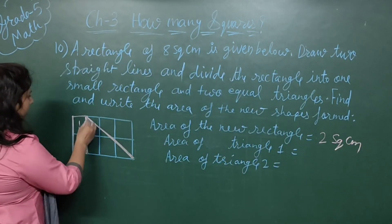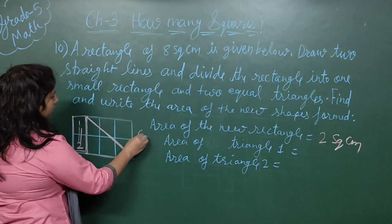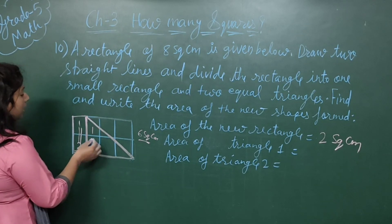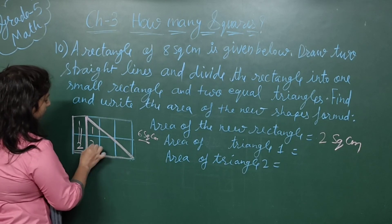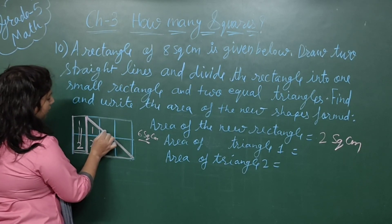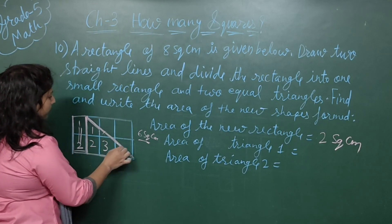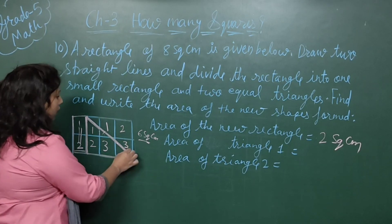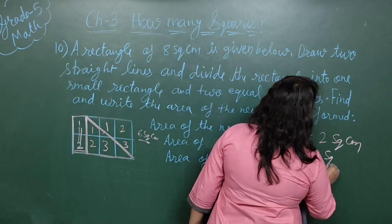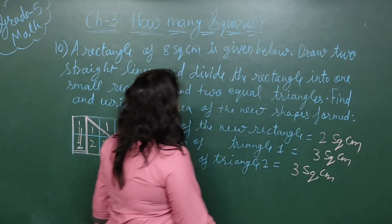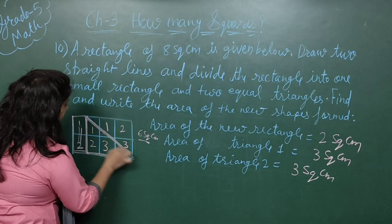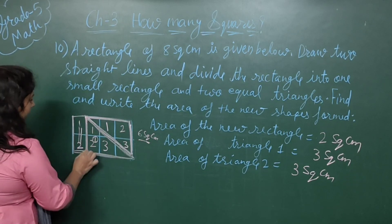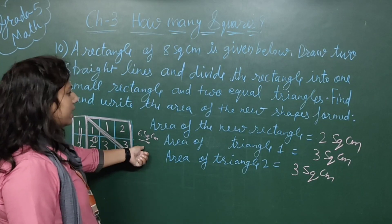The remaining rectangle has 6 square centimeters. Taking half of this rectangle: counting more-than-half parts as 1, 2, complete square 3 — omitting the rest. We count 1 more than half, 2 more than half, 3 more than half. So each triangle has an area of 3 square centimeters. Both triangles together have a total area of 6 square centimeters.